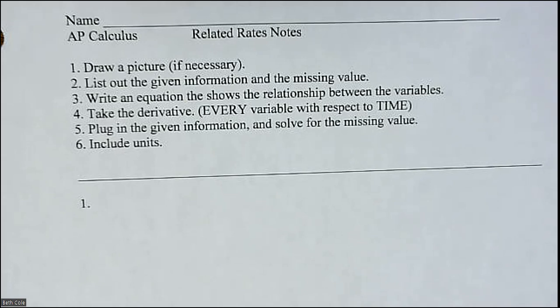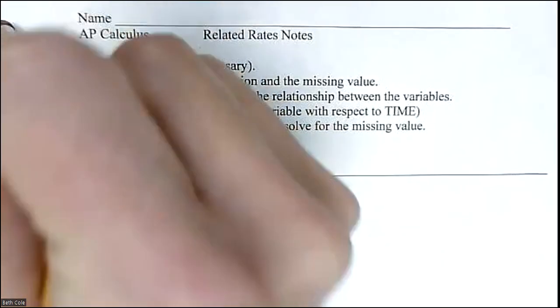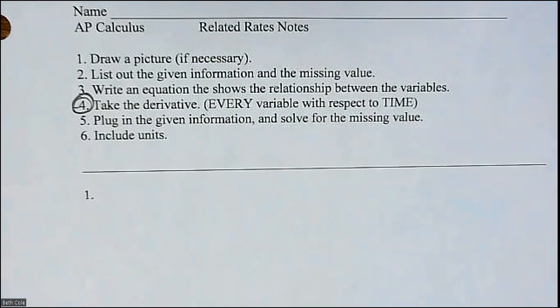So here are the steps. You're going to draw a picture if necessary — usually it will be. Make a list of what you're given and then the missing value, which I call the question mark value. Then you have to come up with an equation that relates the variables. Oftentimes it'll be one of those things on the little strip of paper I gave you — the volume of a cone, Pythagorean theorem, et cetera. Take the derivative — this is probably the most important step because that's the calculus. And here's what's crucial: every single variable is with respect to time. So instead of dy/dx, now it's dt for every single variable. You'll have dy/dt, dx/dt, dv/dt, dq/dt, dm/dt. Every variable gets a dt. Everything is with respect to time.